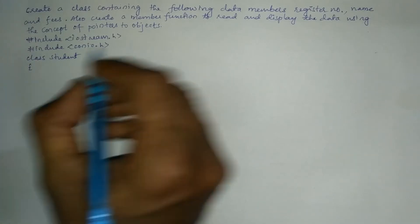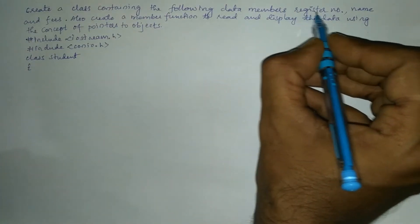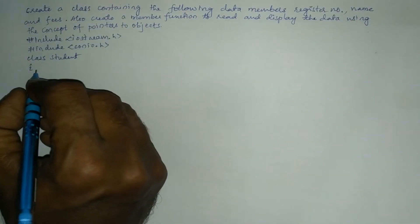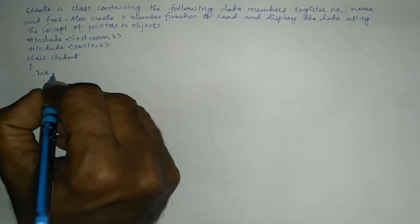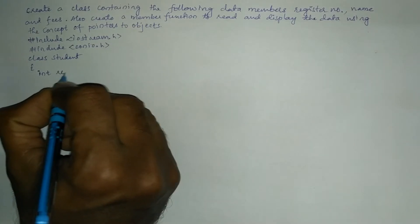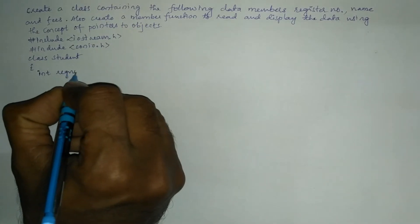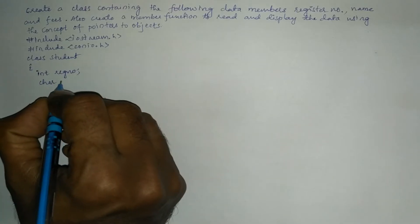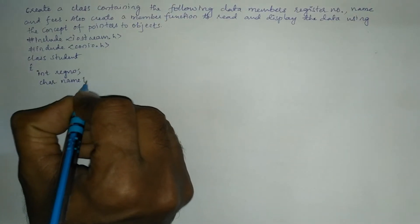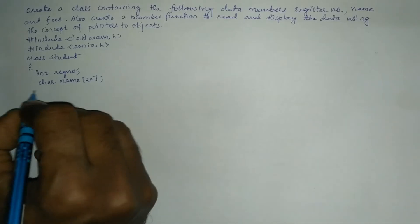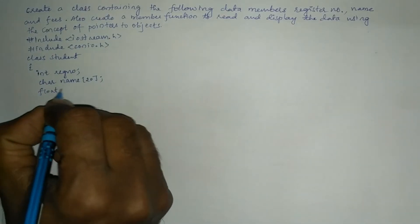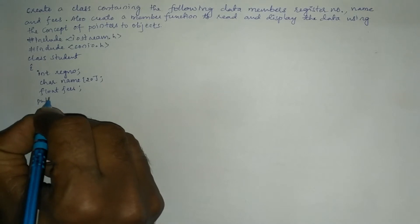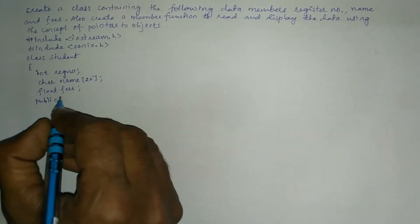Inside the class we are going to use three data members: register number, name, and fees. We declare register number as an integer type, next name of the student as a char array of size 20, and then float fees.